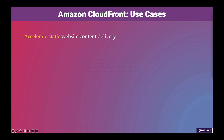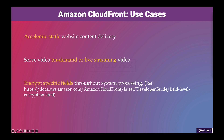Let's look at AWS CloudFront use cases. CloudFront can speed up the delivery of static content, such as images, style sheets, and JavaScript, to viewers across the globe. You can use CloudFront to serve video on demand or live streaming video. You can encrypt specific fields throughout system processing — for example, in addition to HTTPS security, you can add field-level encryption to protect specific data. Running serverless code at the edge provides reduced latency and helps you customize the content. For example, you can return a custom error message when your origin server is down for maintenance, so your viewers don't get a generic HTTP error message.